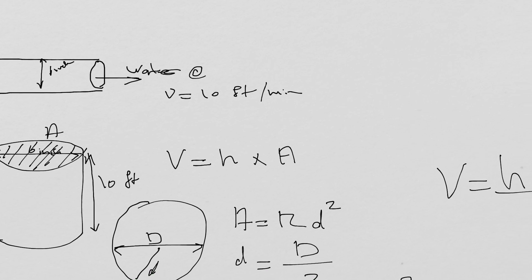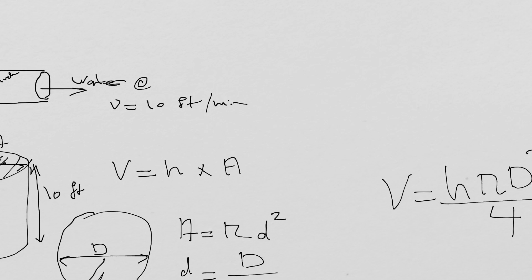Now going back to our original problem, we want to calculate the volumetric flow rate. Volumetric flow rate is about volume per time, so we have a time element. The volumetric flow rate — indicated with a dot — is the area of the cross-section of the pipe times the velocity.